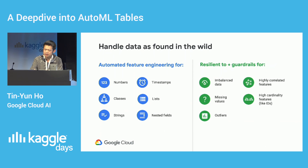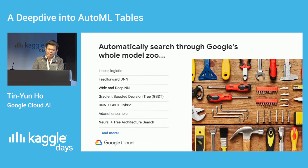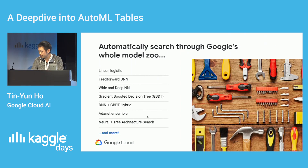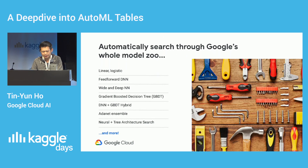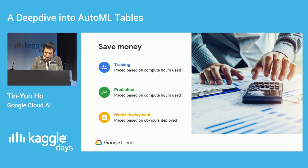We also seek to be resilient to and provide guardrails for dealing with imbalanced data, missing values, outliers, highly correlated features, and high cardinality features like IDs. We automatically search through Google's whole model zoo of options, ranging from linear and logistic models for simpler data sets all the way to neural and tree architecture search, which Dahl will go over in a bit. We'll try to find the appropriate model based on your data. And you can save money — there's no expensive license fee; it's basically a small percentage over the cost of the underlying compute.